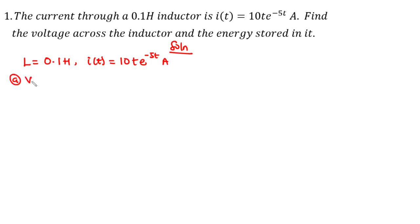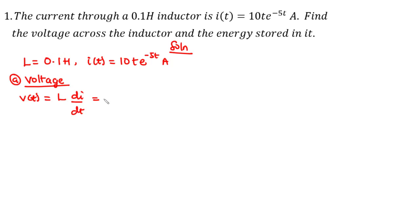First we are asked to find the voltage across the inductor. The voltage v(t) across an inductor is given by v(t) = L·(di/dt), where L is the inductance of the inductor. So substituting, we have 0.1 times d/dt of i(t).